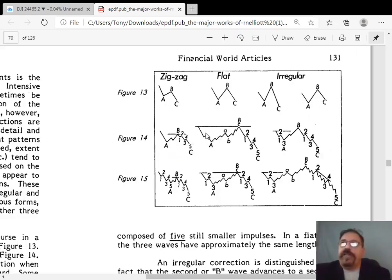And this shows how these waves subdivide. A flat correction subdivides as a 3-3-5 pattern. In fact, all flats do 3-3-5 pattern, whether irregular or regular. And zigzags, they subdivide as a 5-3-5 pattern. Because the A wave is bigger than the B, it's generally 5 waves. And the B wave is retracing that for the smaller 3 wave. So that's a 5-3-5 pattern.